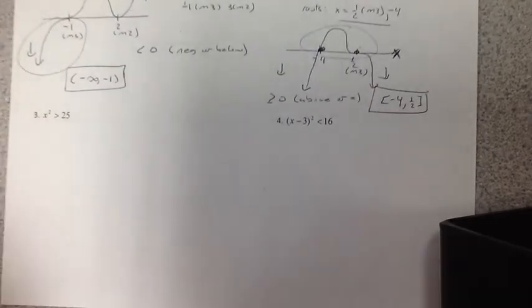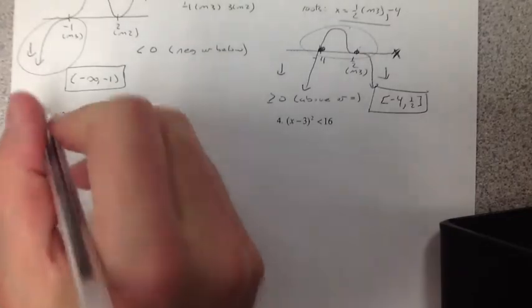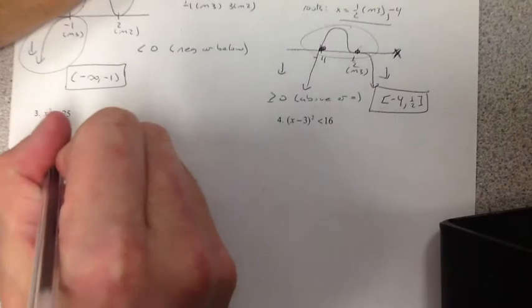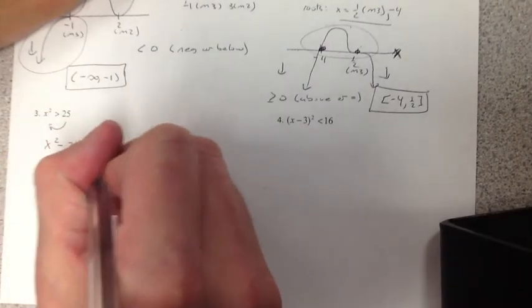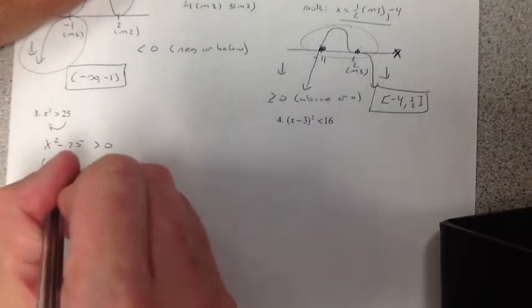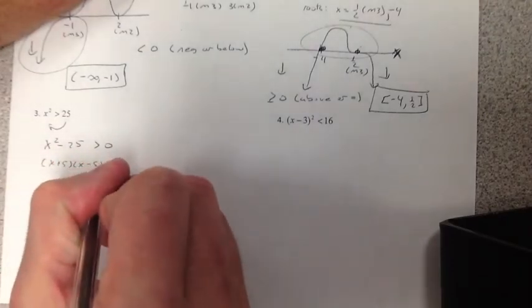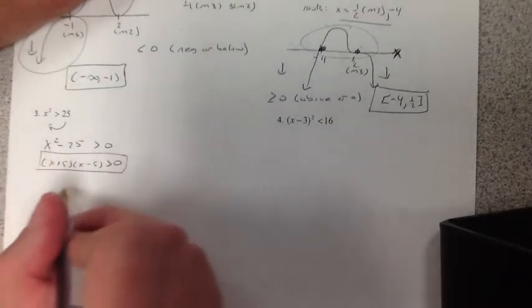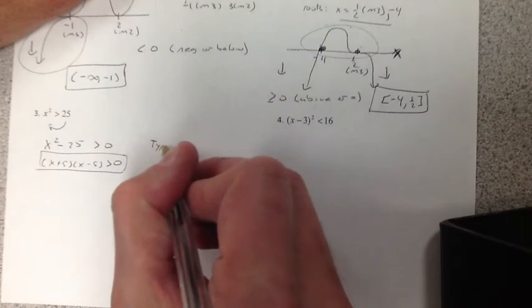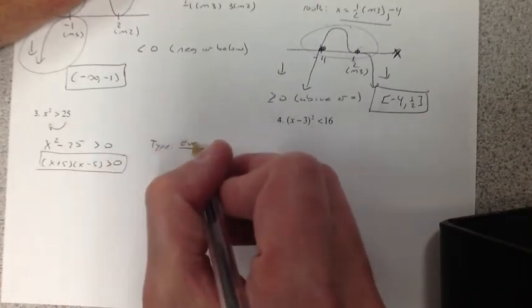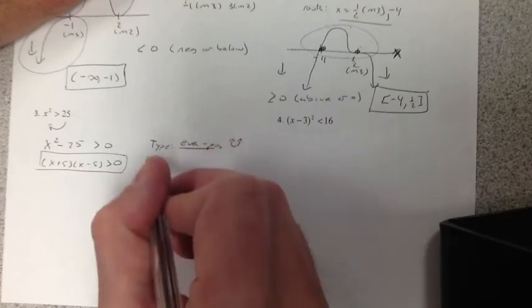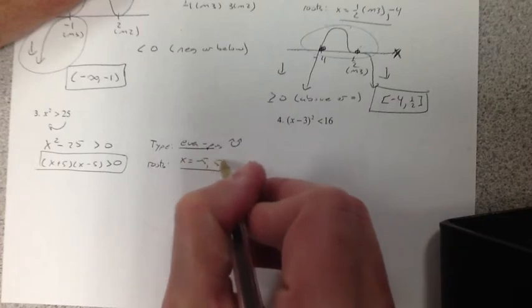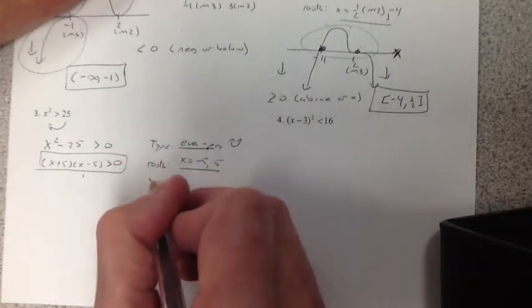Now how is it so friendly for us? Well let's take a look at number 3. Now the only thing I really must stress to you, you have to get it equal to 0. So this is going to become x squared minus 25 is greater than 0. So I factor it: x plus 5, x minus 5, greater than 0. And this is what I'm going to solve. My type: you already know this one. It's even positive. It's a parabola. My roots: we get those pretty easily. Negative 5 and positive 5.